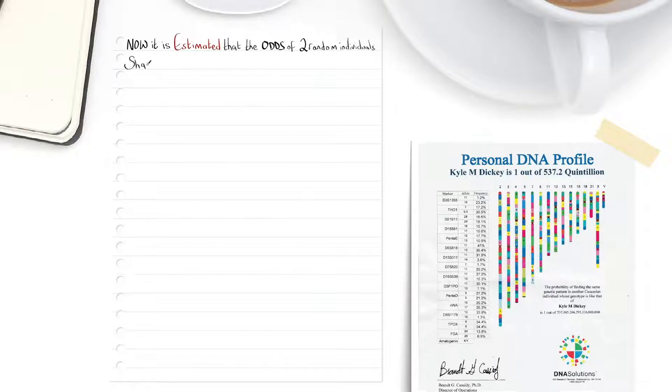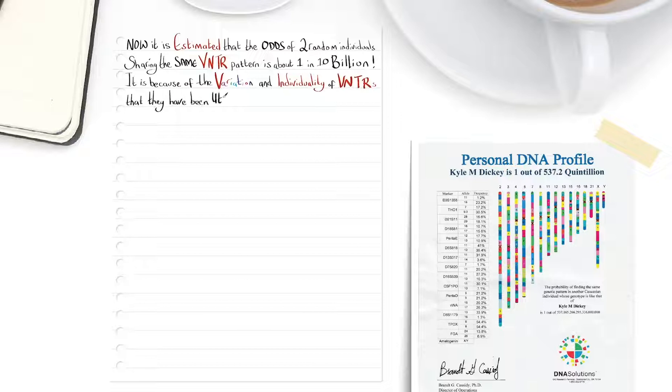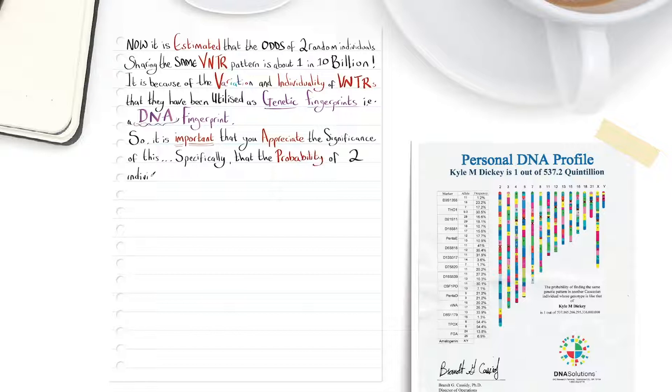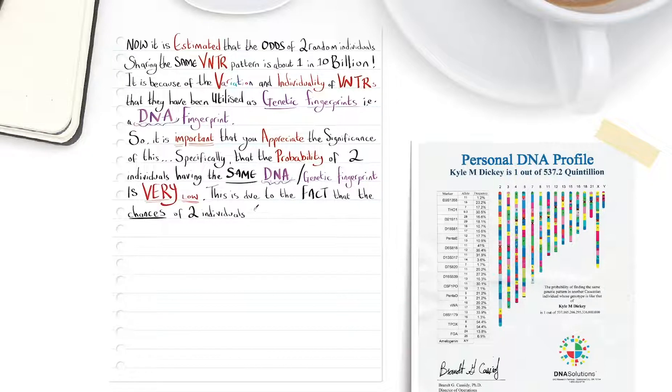Now, it is estimated that the odds of two random individuals sharing the same VNTR pattern is about 1 in 10 billion, and it is because of the variation and individuality of these VNTRs that they have been utilised as genetic fingerprints, a DNA fingerprint. So, it is important that you appreciate the significance of this, specifically that the probability of two individuals having the same DNA, or genetic fingerprint, is very low. This is due to the fact that the chances of two individuals having the same number of VNTRs at each specific loci on the allele, or DNA, is very low.